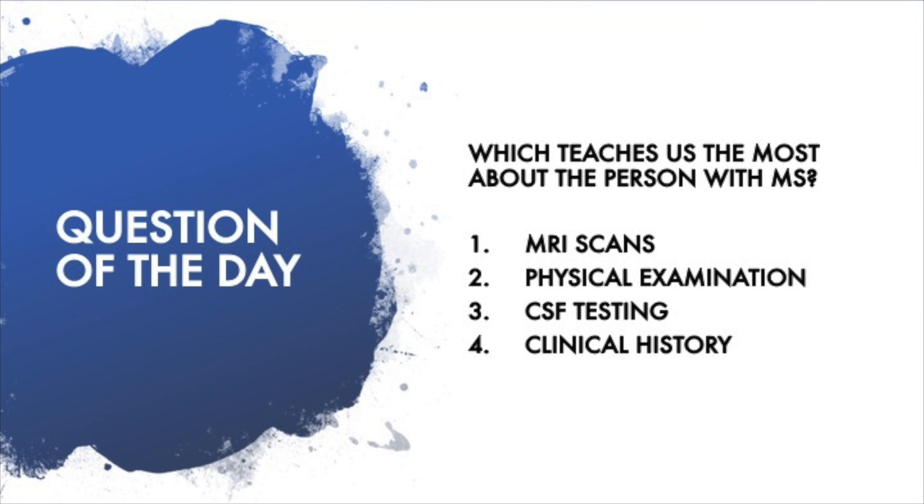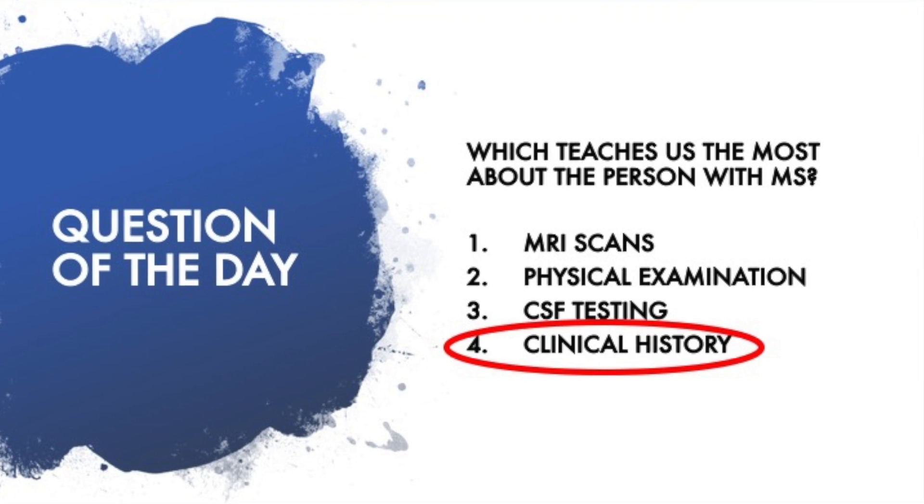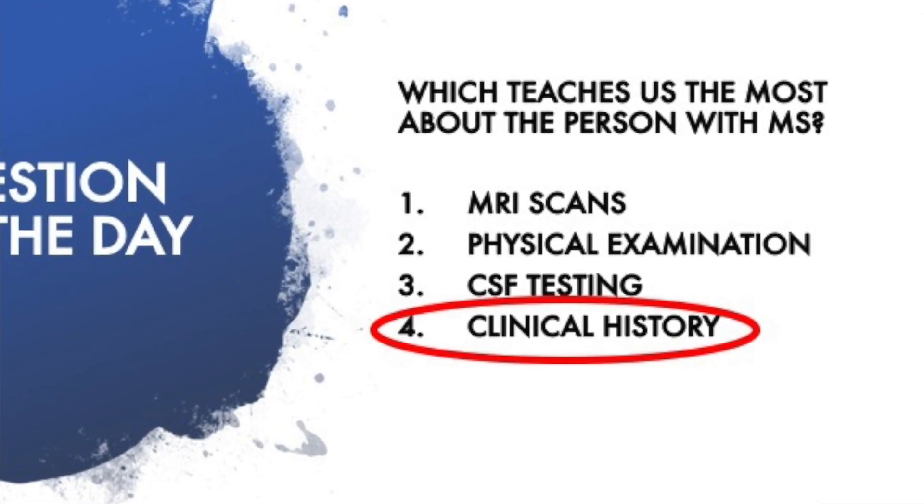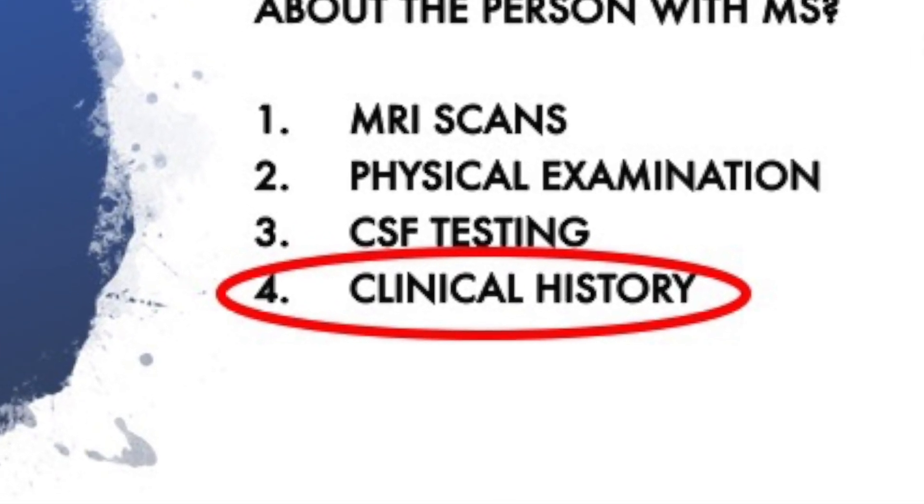Now it's time to answer the question of the day: Which teaches us the most about a person with MS? The answer is number four — the clinical history. What we learn by talking to the human being and listening carefully teaches us more than the MRI, the neuro exam, or any CSF testing. What questions surrounding the MS diagnosis do you still have? Leave them in the comments and I'll answer them in upcoming videos or live streams. This is the second installment in a two-part series on MS diagnosis. Thanks for learning about MS with me, Aaron Boster — take care.